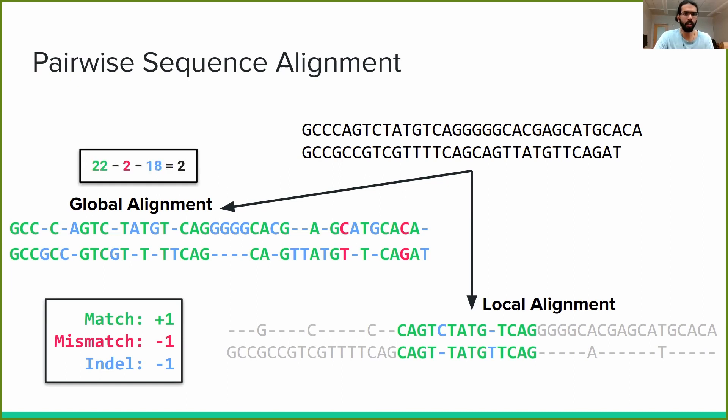Our global alignment has 22 matches, 18 indels, and two mismatches, giving us an overall score of plus two. An optimal global alignment is defined as a maximum score alignment among all possible alignments of two sequences over their entire lengths.